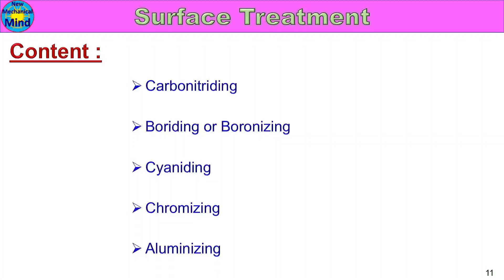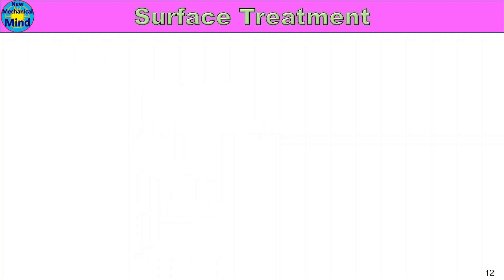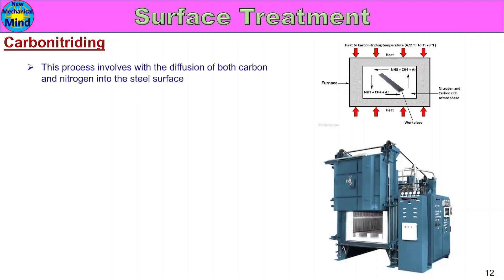First, carbon nitriding. This process involves the diffusion of both carbon and nitrogen into the steel surface. Carbon and nitrogen diffuse into the steel part surface.